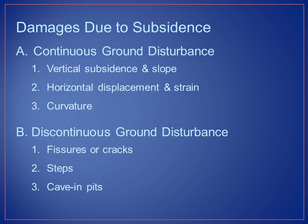Damages due to subsidence: there are two types of disturbances. First, continuous ground disturbance, which includes vertical subsidence and slope, horizontal displacement and strain, and curvature. Second, discontinuous ground disturbance, which includes fissures or cracks, steps, and cave-in pits.